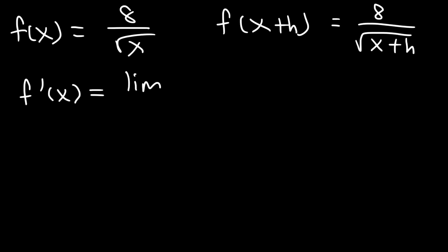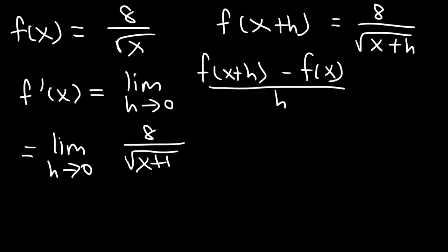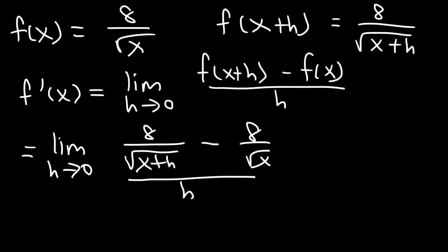It's always good to rewrite the formula to avoid making mistakes. So we have the limit as h approaches 0, and f of x plus h is 8 over the square root of x plus h, and then minus f of x, and then divided by h. So now we have a complex fraction with radicals.